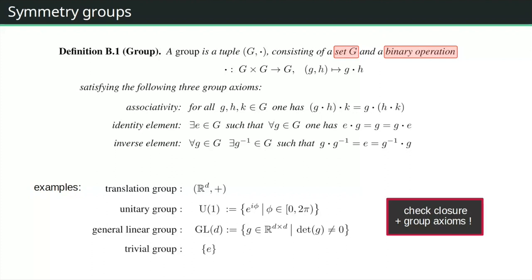Another example is the general linear group GL(d): d×d matrices with non-zero determinant, composed by matrix multiplication. Closure holds, associativity holds for matrix multiplication, the identity matrix is the identity element, and invertible matrices have inverses — which is exactly why we require non-zero determinant. The trivial group has just one element, the identity, and trivially satisfies all group axioms.